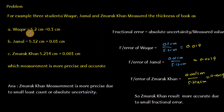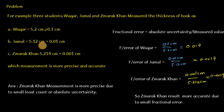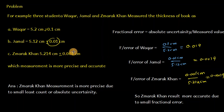According to Waqar, the thickness of the book is 5.2 cm with absolute uncertainty of plus minus 0.1 cm. According to Jamal, the thickness is 5.12 cm with absolute uncertainty of plus minus 0.01 cm. According to Zmarag Khan, the thickness is 5.21 cm with absolute uncertainty of plus minus 0.001 cm.